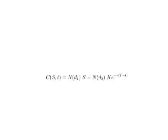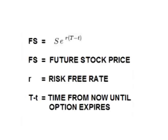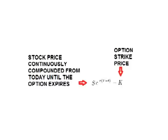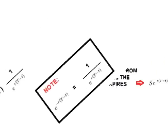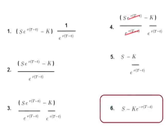Looking at the Black-Scholes formula again, we remove the risk by removing ND1 and ND2. Price increases at the risk-free rate. The strike price is subtracted. The value is discounted to present value. The formula is then distributed and simplified.